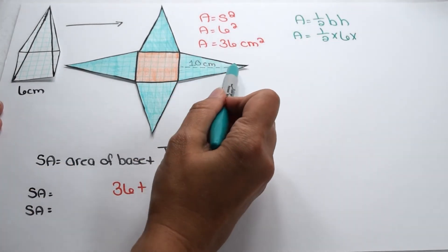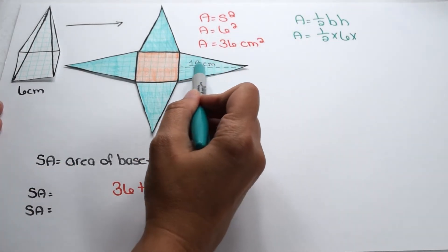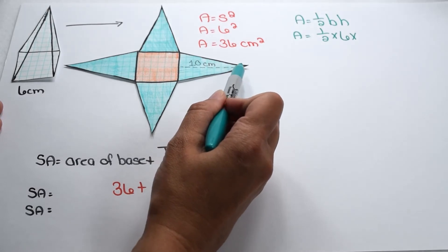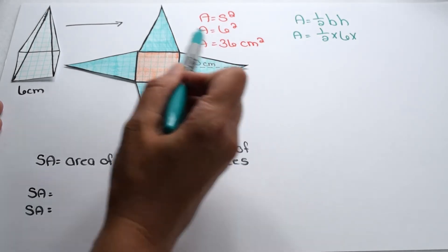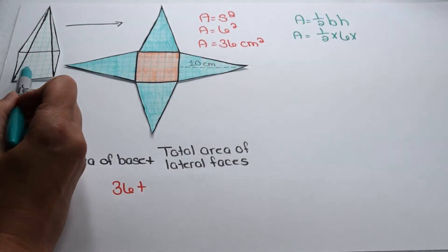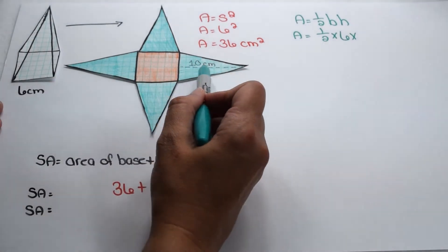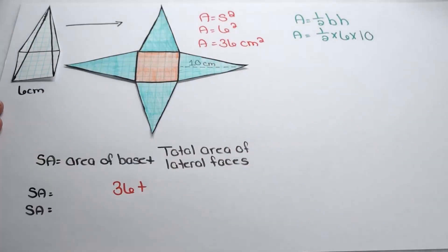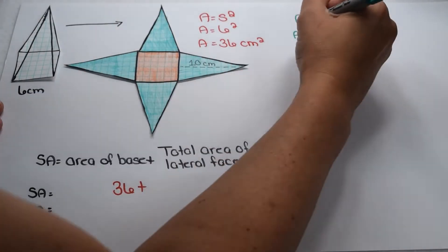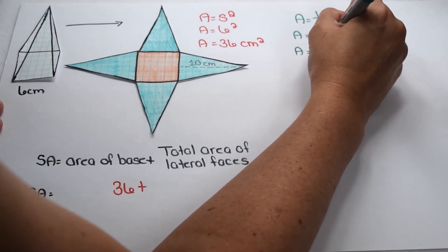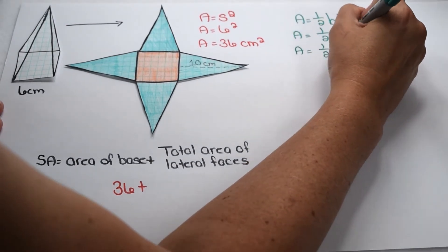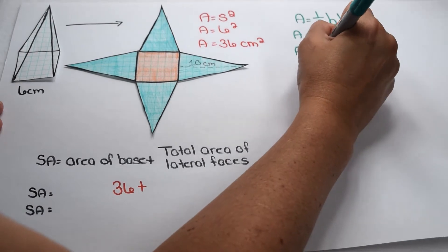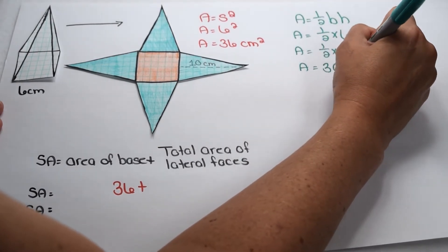We want to multiply by the height of the triangle. On a pyramid, the height of the triangle is also frequently referred to as the slant height, to distinguish it from the height of the entire pyramid. Here, our slant height is 10 centimeters. So we have one half times 6 times 10. 6 times 10 is 60, and then we want half of that. Half of 60 comes out to be 30 square centimeters.